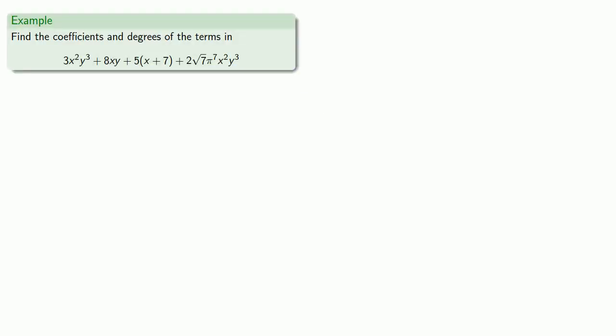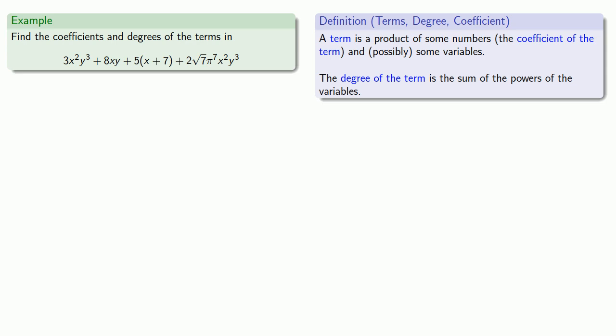For example, let's take a look at an expression like this and see if we can find the coefficients and degrees of the terms, and identify any like terms. So a term is a product of some numbers and possibly some variables. 3x squared y cubed is a term. It's a product of 3 and some variables, x squared y cubed.